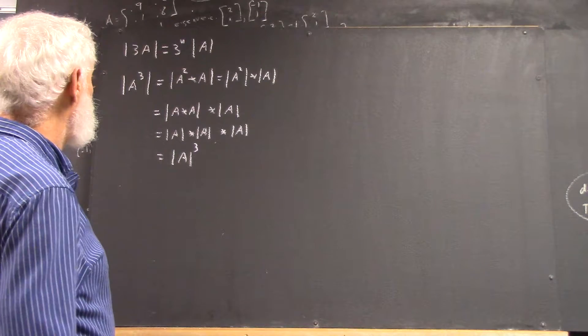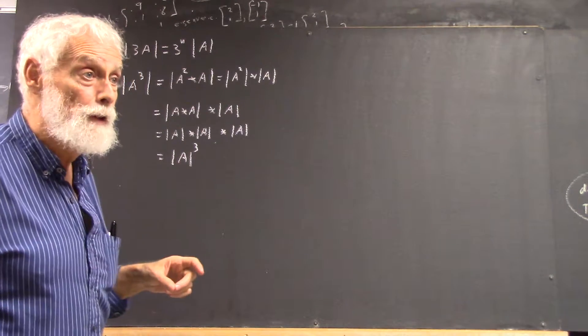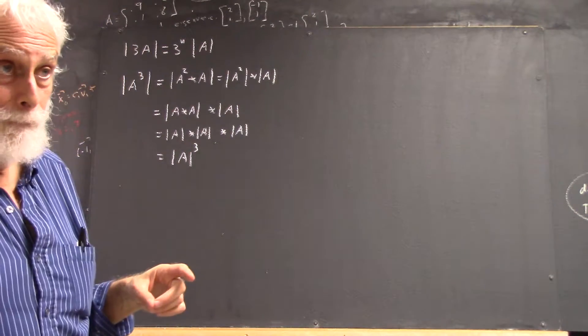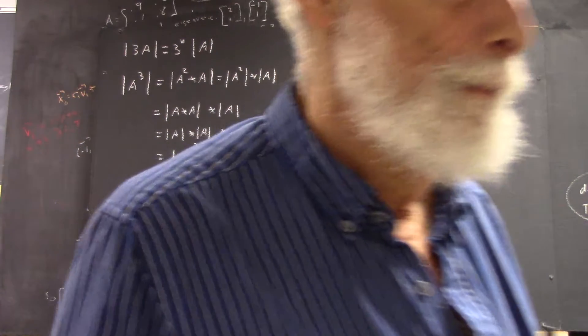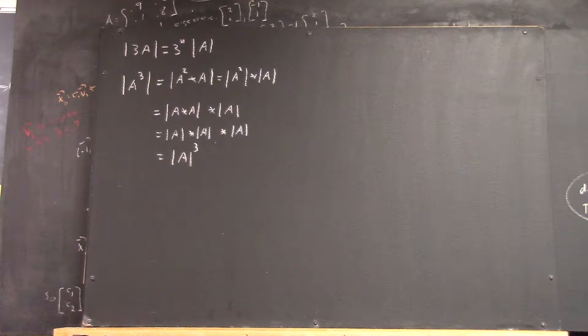Student: So it would just be 7 cubed since the determinant of A was 7? Professor: I'm sorry, I didn't understand that. Oh, the determinant of A was 7, so would it just be 7 cubed? Yeah. So if the determinant of A is 7...